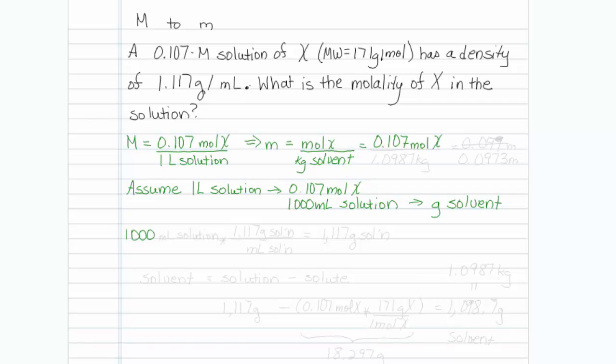Somehow we need to get that to grams of just solvent. The way to do that is to say we have 1,000 mils of solution, and we are given the density. That density is 1.117 grams of solution per ml of solution. So now we can determine that we have 1,117 grams of solution.